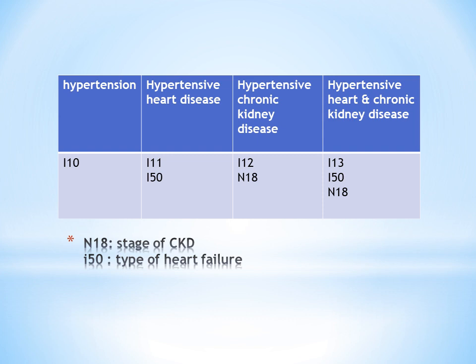There are three combination conditions. The first is hypertension with heart disease. This is a combination code: I11. If we assign I11 for Hypertensive Heart Disease, we also use I50 for heart failure.